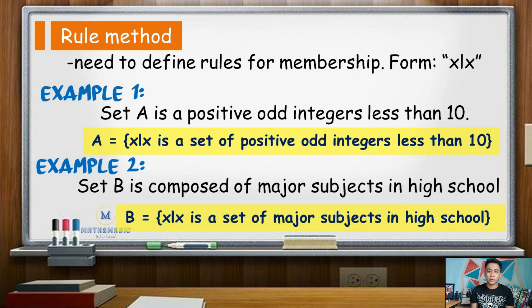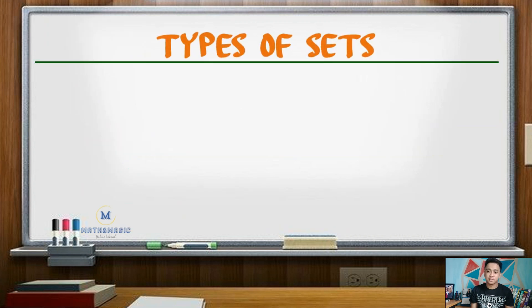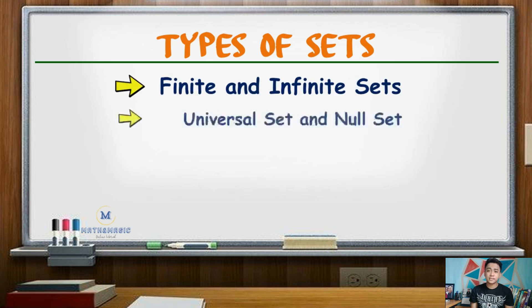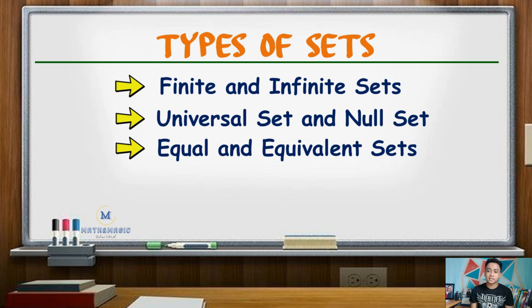After knowing the different ways of defining sets, let us now go to its types. So, this includes finite and infinite sets, universal set and null set, equal and equivalent sets, joint and disjoint sets, and lastly, subsets.